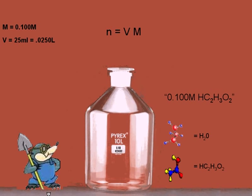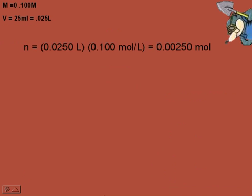25 milliliters is 0.0250 liters. Therefore, the amount of solute in moles is equal to 0.0250 liters times 0.100 moles per liter, or 0.00250 moles.